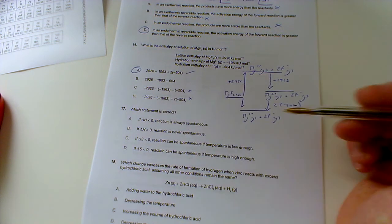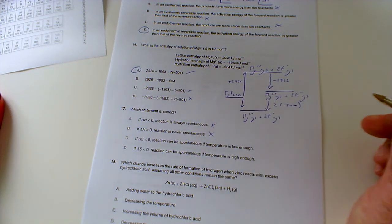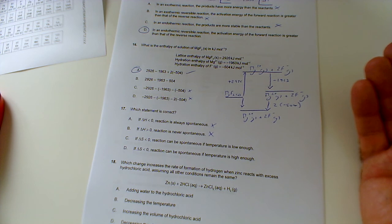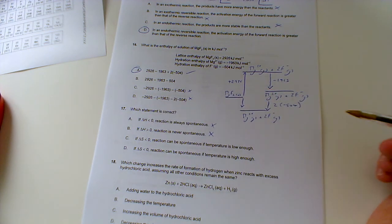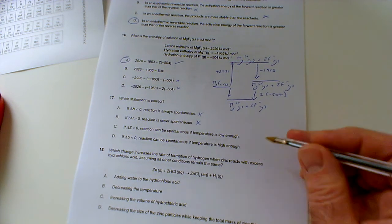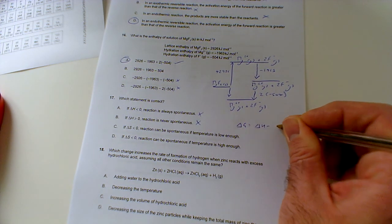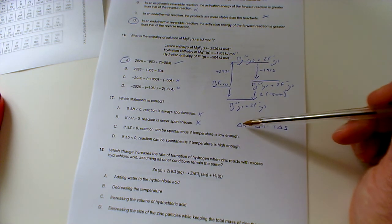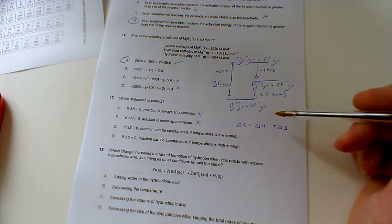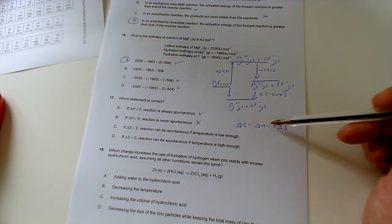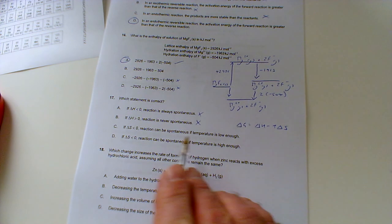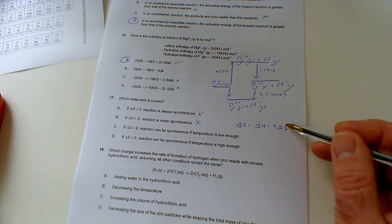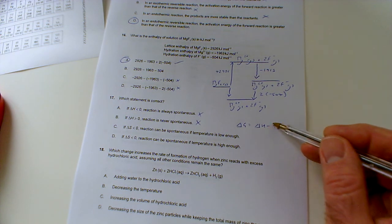Number 17: which statement is correct? If delta H is less than zero, the reaction is always spontaneous. No, not necessarily. You get spontaneous exothermic ones and endothermic ones which are not always going to be spontaneous. It's only going to be spontaneous if delta H is less than zero but then delta S is greater than zero. That's when it could only be always spontaneous. If we look at the Gibbs equation: delta G equals delta H minus T delta S. The reaction is spontaneous as long as delta G is negative. If this is less than zero, that's a good start, but then if delta S is also negative, that could then become positive at higher temperatures.